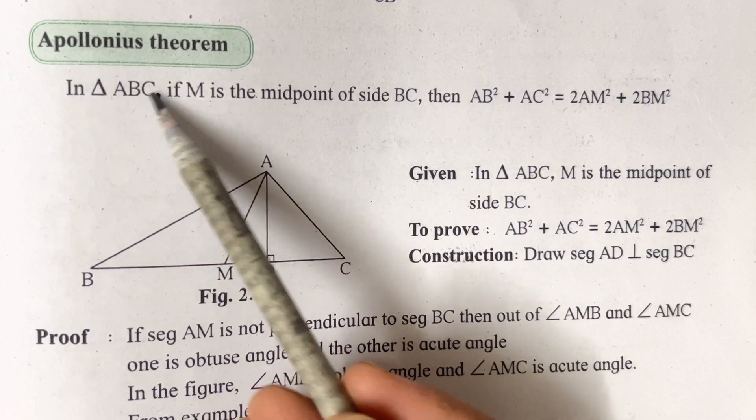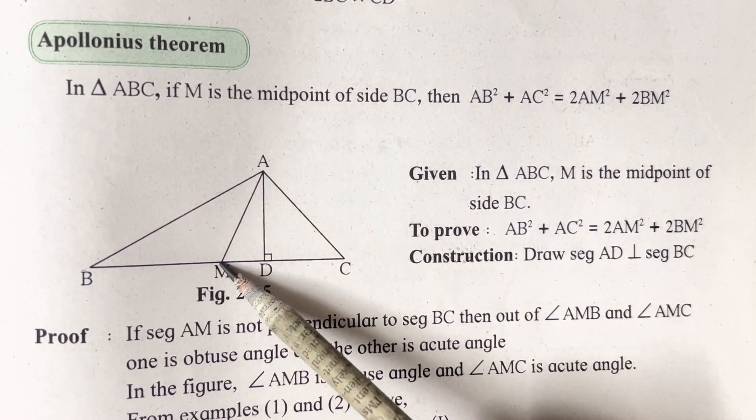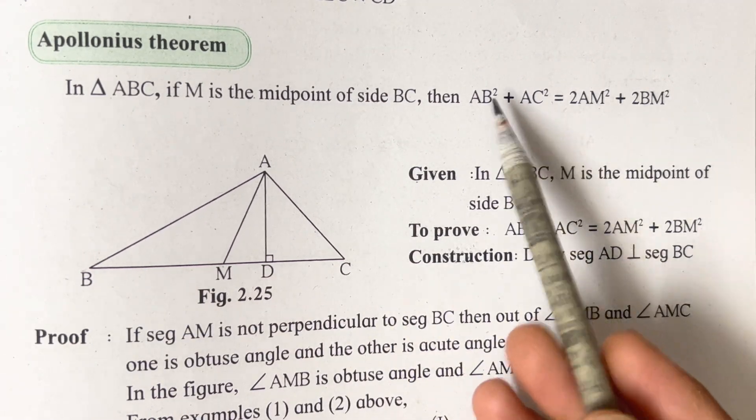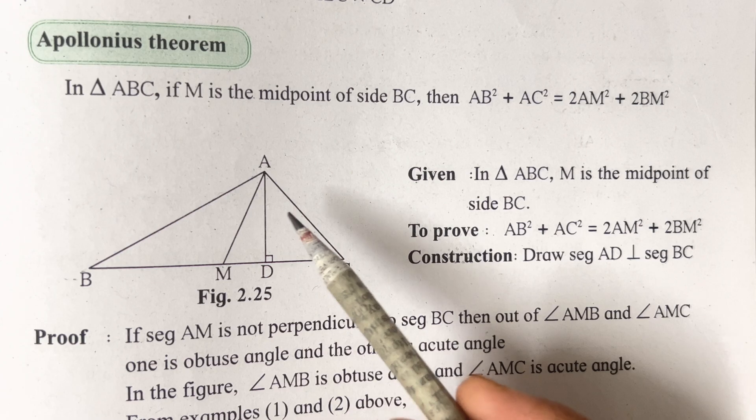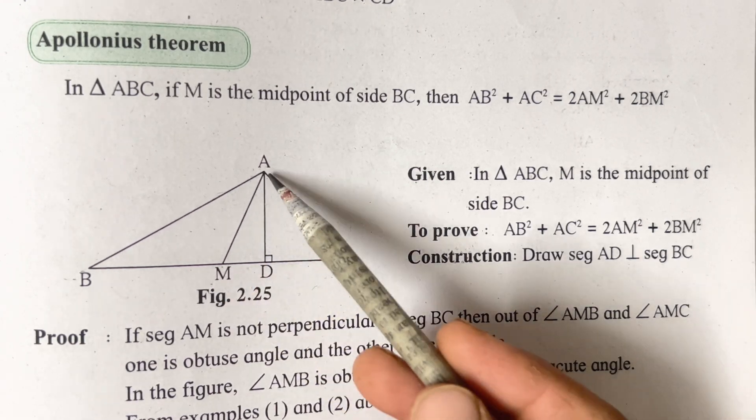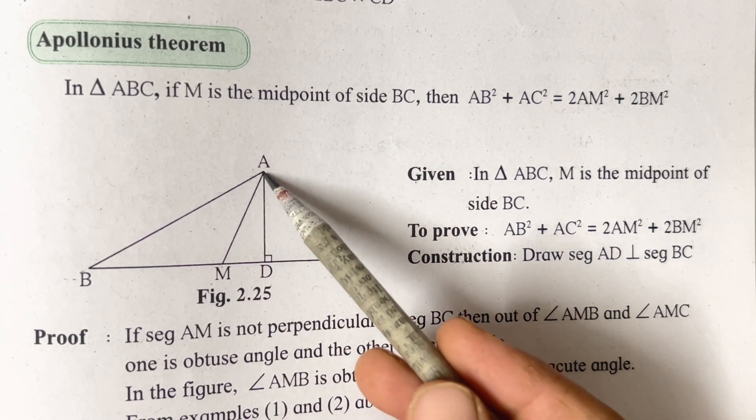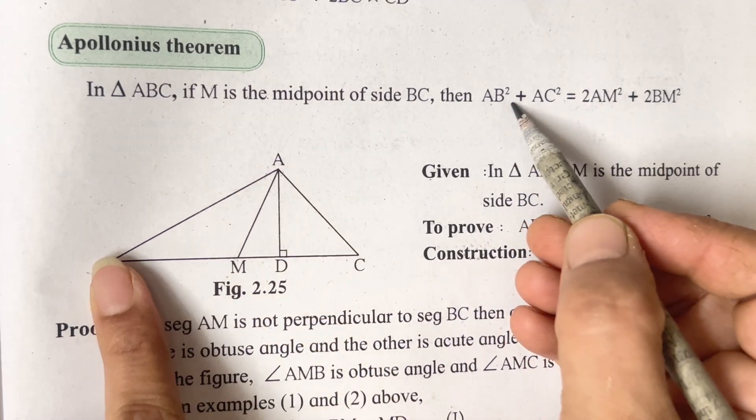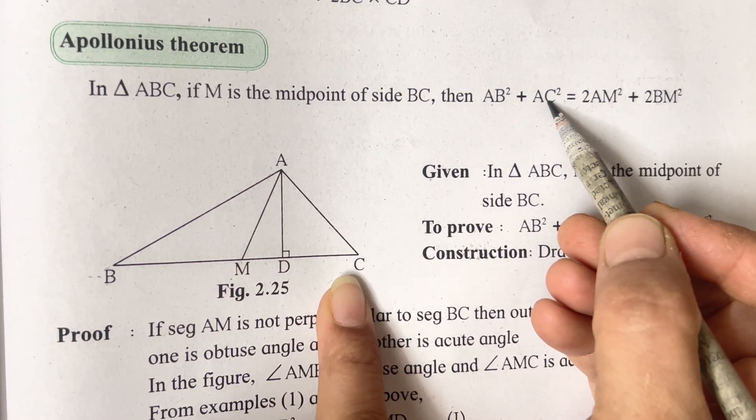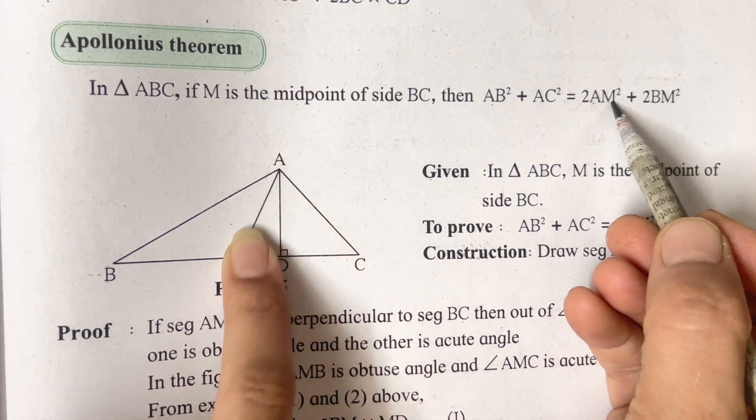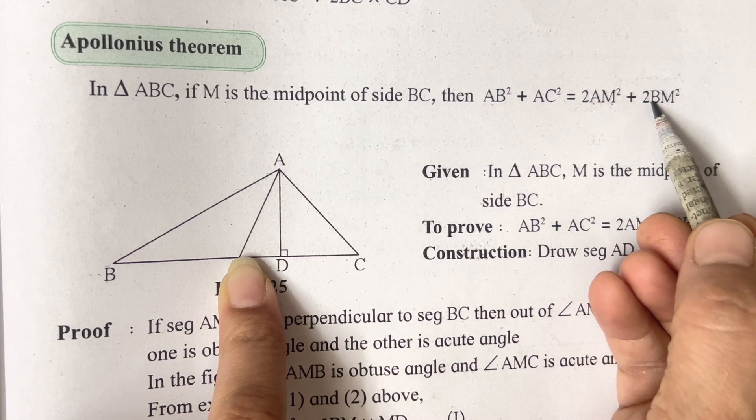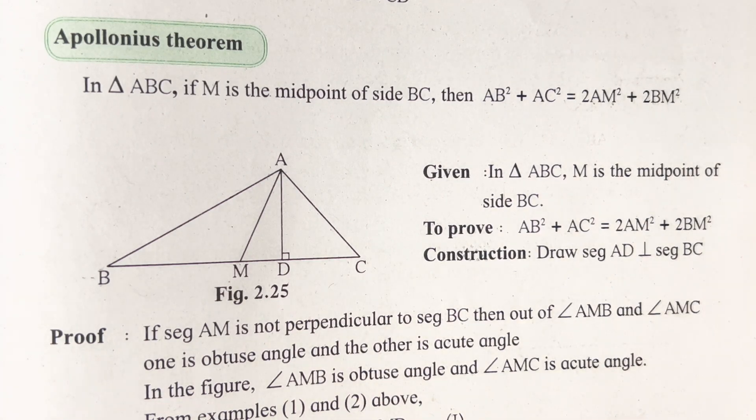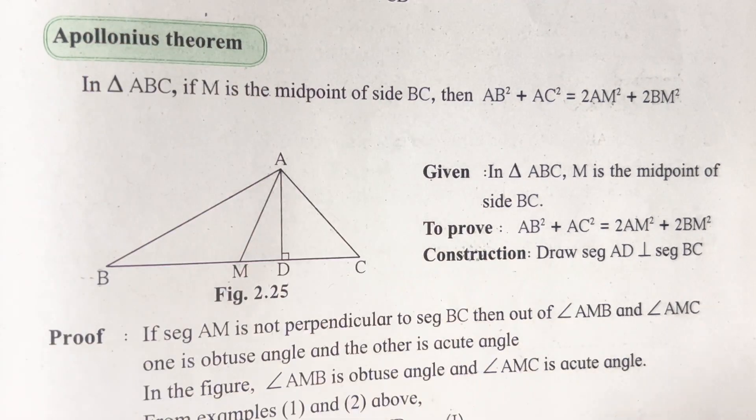In triangle ABC, if M is the midpoint of side BC, then AB square plus AC square is equal to 2AM square plus 2BM square. So again, AB square plus AC square is equal to 2AM square plus 2BM square. This is the statement from Apollonius theorem.